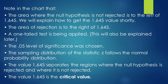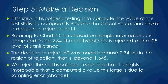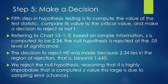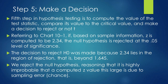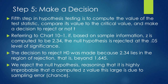In step 5 we make a decision. The fifth step is to compute the value of the test statistic, compare its value to the critical value, and make a decision to reject or not reject. Here we compare the computed Z value, which equals 2.34, with the critical value, which equals 1.645, and on the basis of both values we reject or accept our null hypothesis.